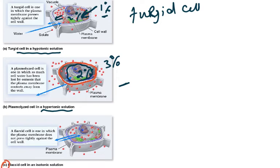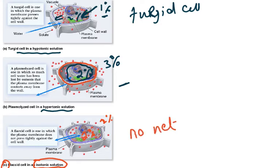A flaccid cell is one in an isotonic solution where the cell membrane does not press tightly against the cell wall — it is there, but not tightly pressed. Isotonic means inside is 2% and outside is 2%, so there is no net movement of water molecules taking place.